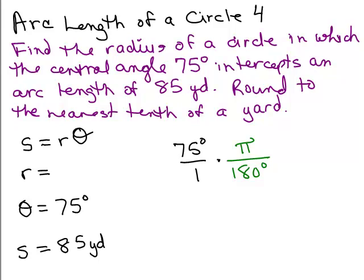And then what goes into both 75 and 180? Well, 5 goes into both of those. So that would be 15. So 75 divided by 5 is 15, 180 divided by 5 is 36.